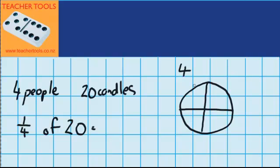So I'm thinking to myself, 4, because there's 4 pieces, times what will give me all those 20 candles. And I know that 4 times 5 equals 20, and I can check that.